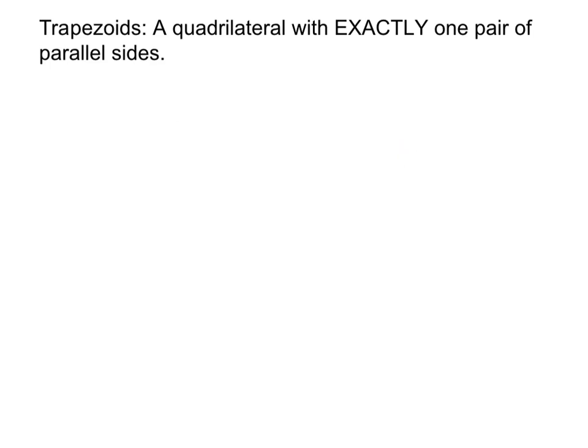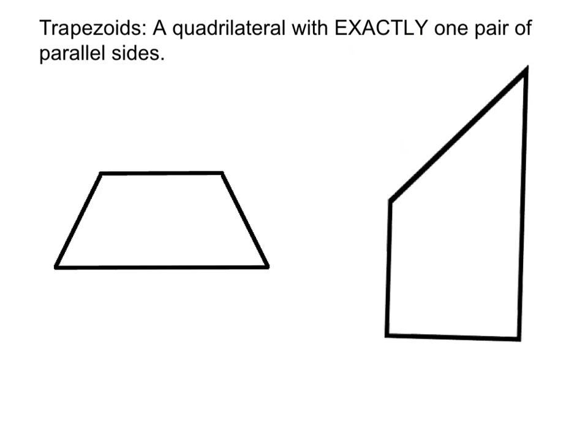First, what is a trapezoid? A trapezoid is a quadrilateral with exactly one pair of parallel sides. If both sets of sides were parallel, then it would be a parallelogram, and that's not what we're talking about. Here we have some examples of parallelograms. Notice that we can say our opposite sides are parallel, but they're not congruent. They're different side lengths.